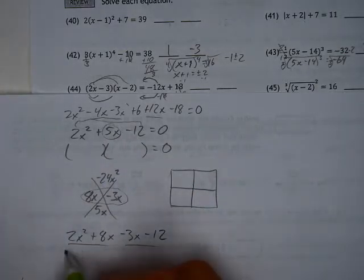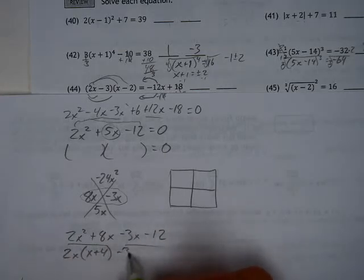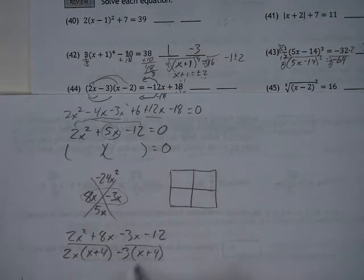Now if we group them together, I take out a 2x, I have an x plus 4 left. If I take out a negative 3, I have an x plus 4 left. So that means my two factors, if I take out the x plus 4s, I'm left with a 2x minus 3.